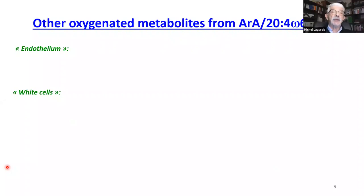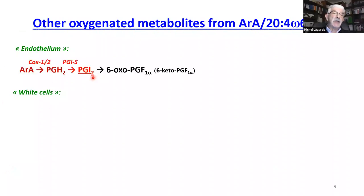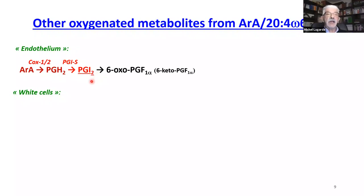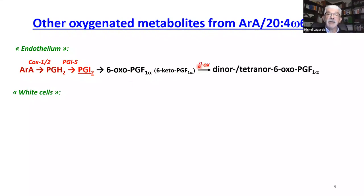Turning to the blood compartment, other metabolic contributions come from endothelium and white cells. In endothelium, PGH2 is mainly converted into prostacyclin, a potent inhibitor of platelet aggregation and vasodilator — the opposite action to thromboxane A2. Prostacyclin has a half-life of about two minutes and is degraded into 6-oxo-PGF1-alpha (also called 6-keto-PGF1-alpha), which is further beta-oxidized into dinor- and tetranor-6-oxo-PGF1-alpha. Therefore, measuring 6-oxo-PGF1-alpha alone is not sufficient.